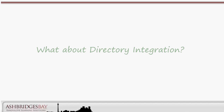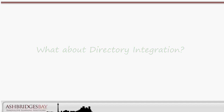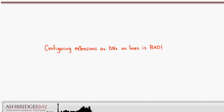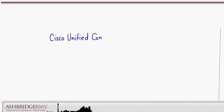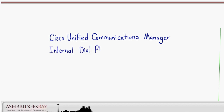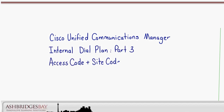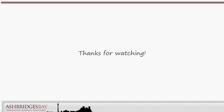Yet another point to consider is directory integration. What if we want to integrate with a corporate directory? What phone numbers are configured in this directory? These are the numbers users will see when searching the directory on their phones, and these numbers need to be dialable. Have we convinced you yet? If you'd like to see how we can fix these problems, have a look at our whiteboard drawing: Internal Dial Plan Part 3 — Access Code Plus Site Code Plus Extensions On Lines. Thanks for watching!